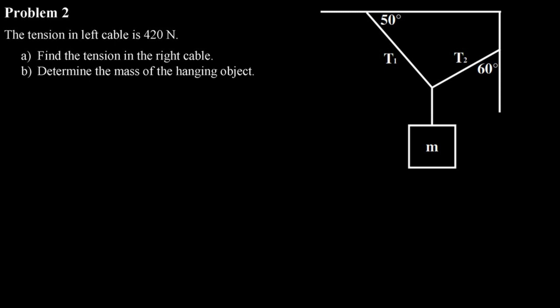For this question, we've got a mass which is being held up by two ropes connected to the wall and the ceiling at different angles. This question's a little different because they don't tell us the mass of that object. They tell us that the tension in the left cable is 420 N. That's going to be the value for T1.